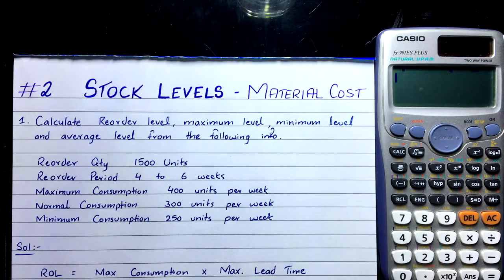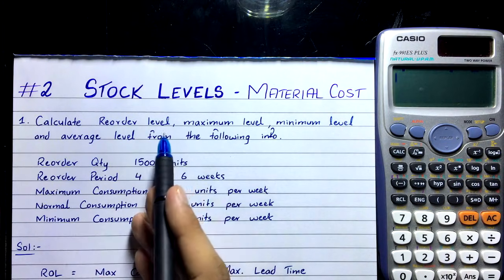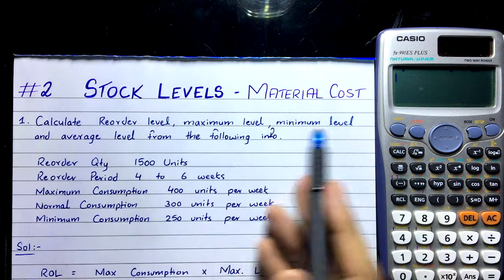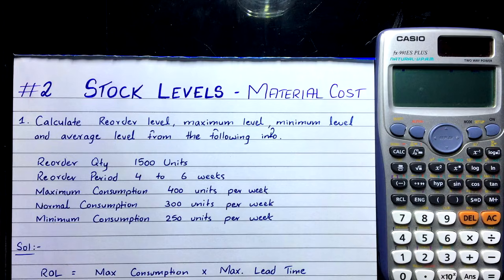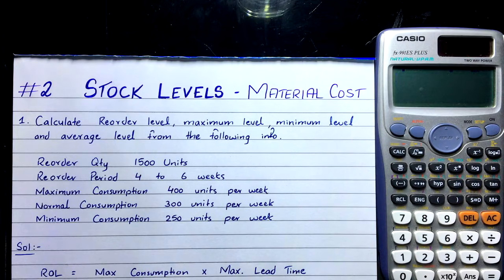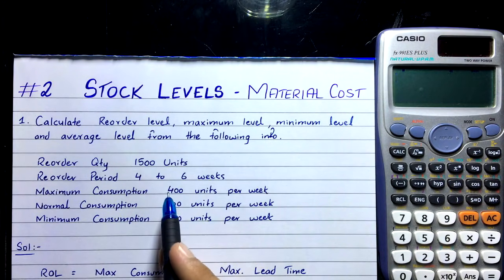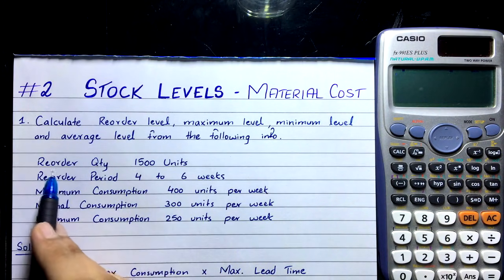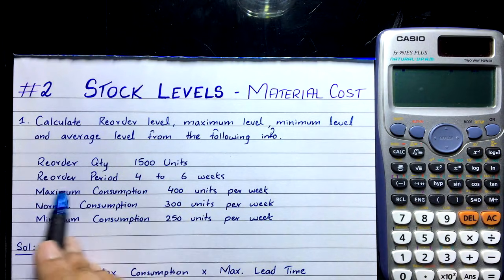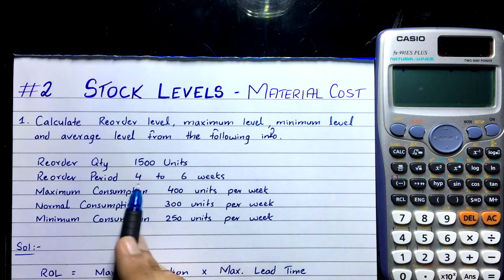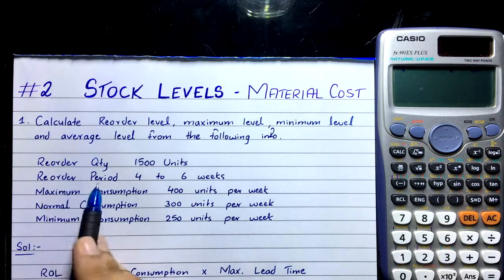In this video we are going to solve a problem. It's very simple: calculate reorder level, maximum level, minimum level, and average level from the following information. We are given: reorder quantity — 1,500 units; reorder period — 4 to 6 weeks.